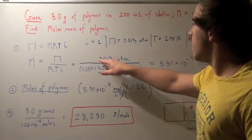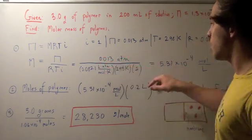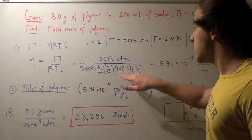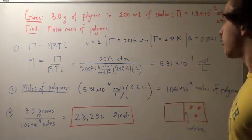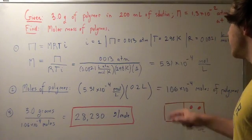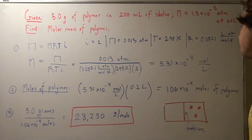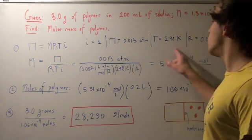So we plug in our osmotic pressure 0.013 atm over our constant times our temperature times I or 1. So atm cancel, the Kelvins cancel, and we get 5.31 times 10 to the negative 4 moles per liter. So this is our molarity.